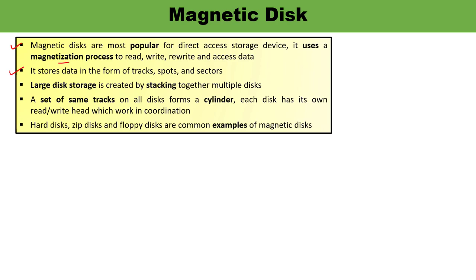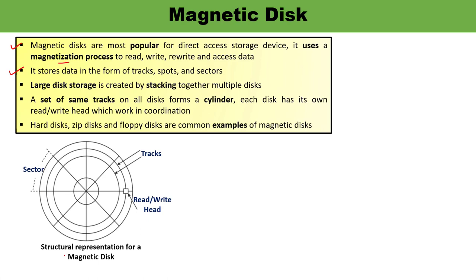What is this track and sector? You can see this particular diagram — here it shows the structural representation of a magnetic disk. You can see a circular plate, which is actually a platter. Each platter consists of concentric circles known as tracks. You can see three tracks here — track one, track two, and track three. These tracks are further divided into sectors. You can see sector one, sector two, sector three of this track, and similarly there are sectors in the other tracks also.